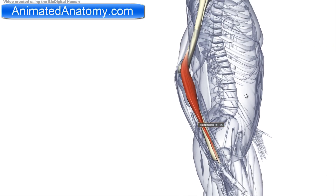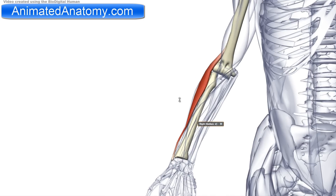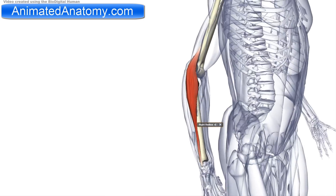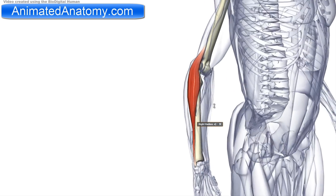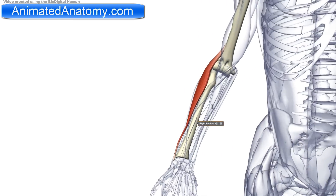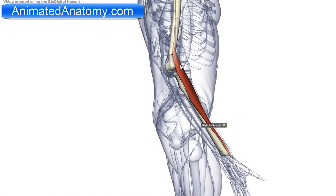The nerve that innervates this muscle is the radial nerve, and the action of this muscle is flexion of the forearm. You can see where it inserts and where it comes from — when this muscle contracts it's obviously not going to extend the forearm; it's going to flex it.